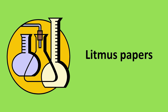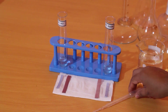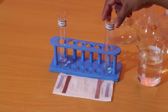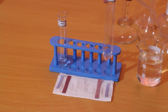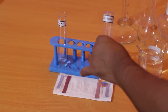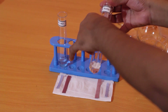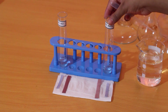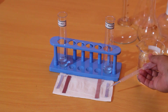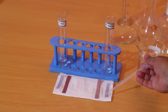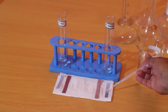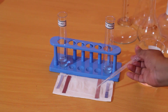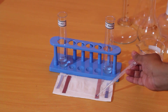We are going to differentiate an acidic solution and a basic solution by using the indicator litmus papers. Let's start by adding a few drops of sodium hydroxide onto the litmus papers. A basic solution does not cause a color change in blue litmus, but red litmus changes its color into blue.